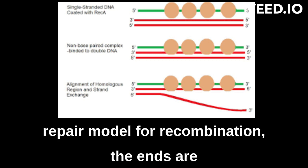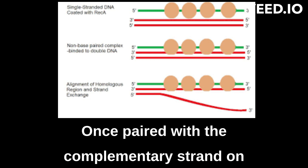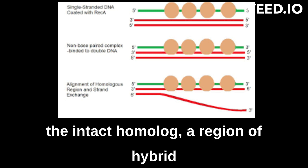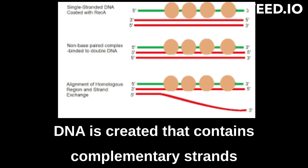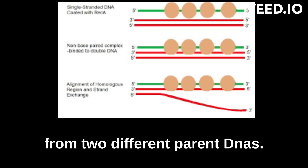In this double-strand break repair model for recombination, the ends are used to initiate the genetic exchange. Once paired with the complementary strand on the intact homolog, a region of hybrid DNA is created that contains complementary strands from two different parent DNAs.